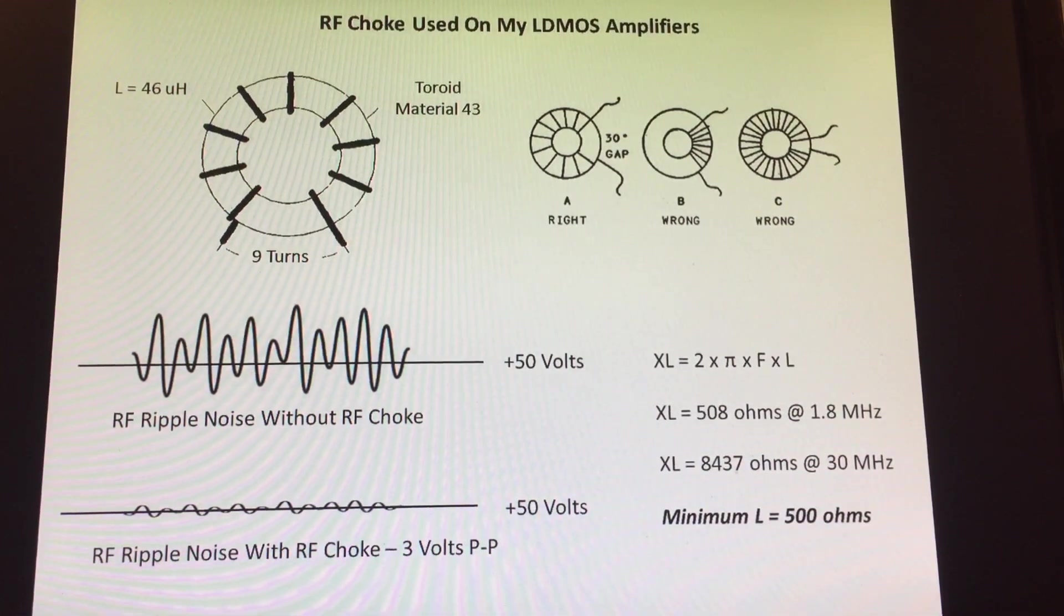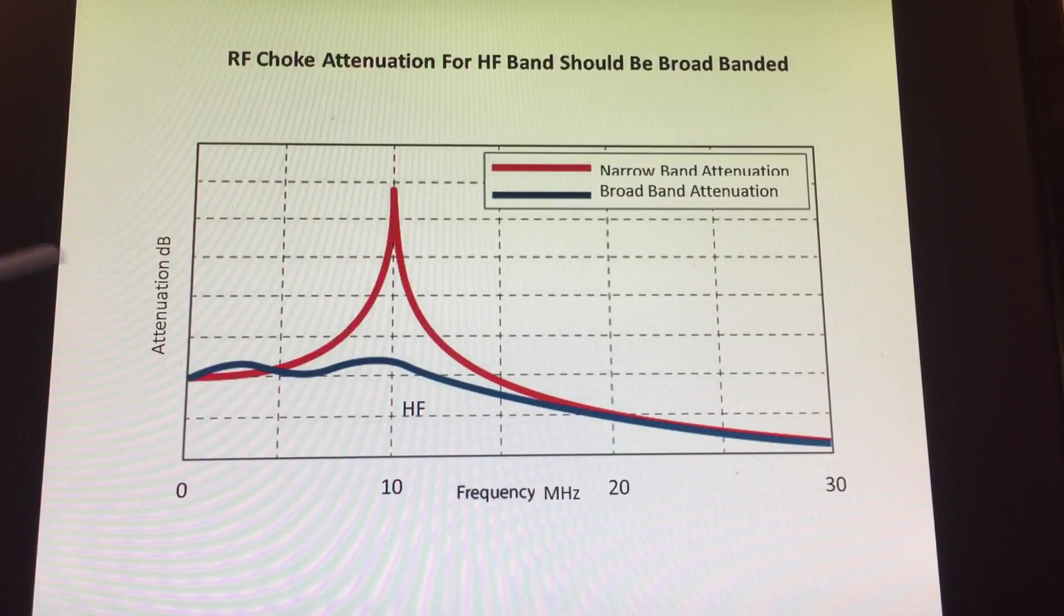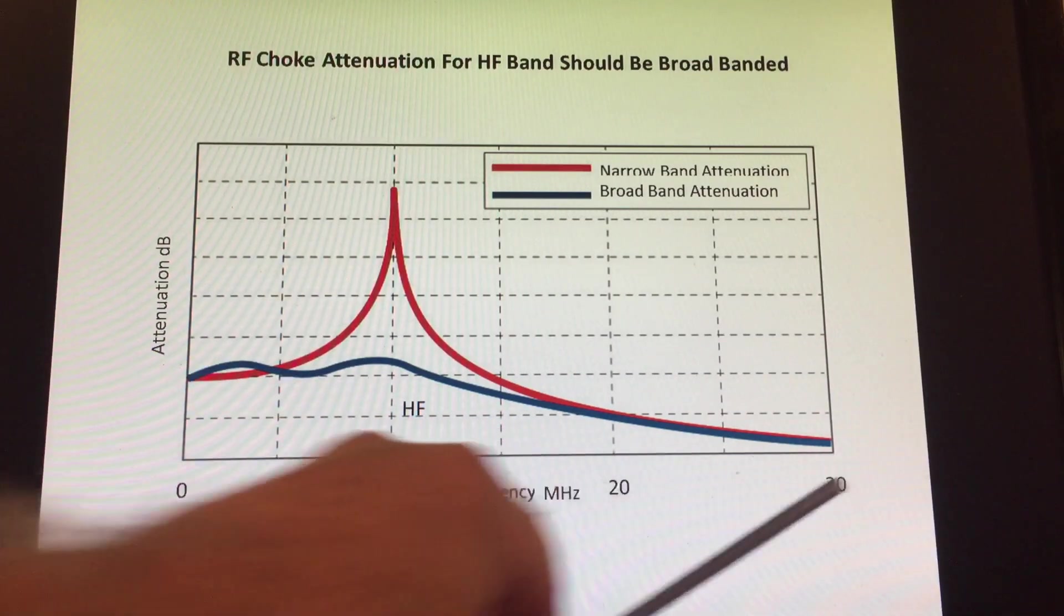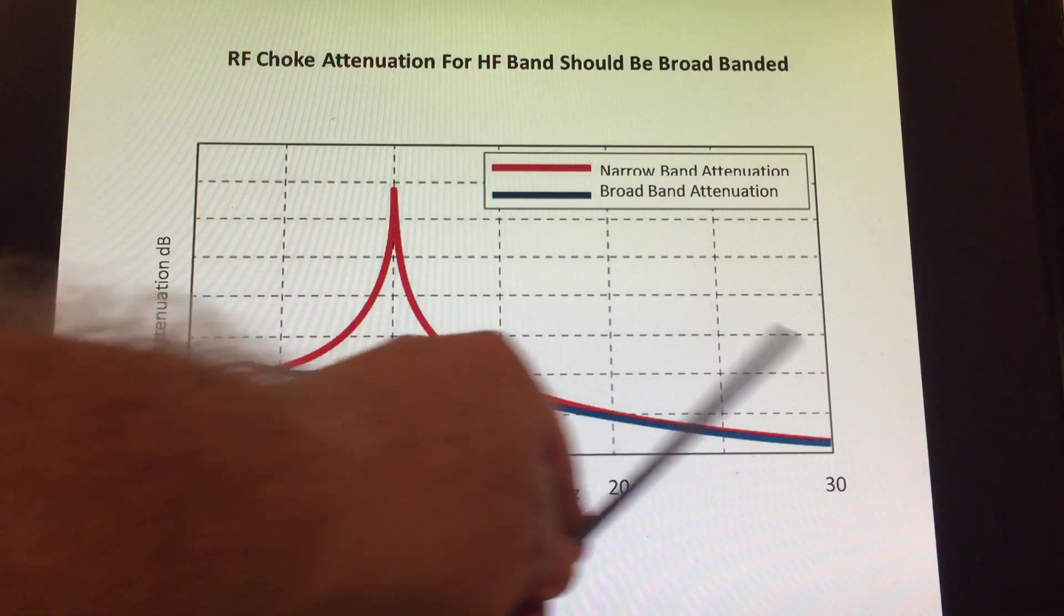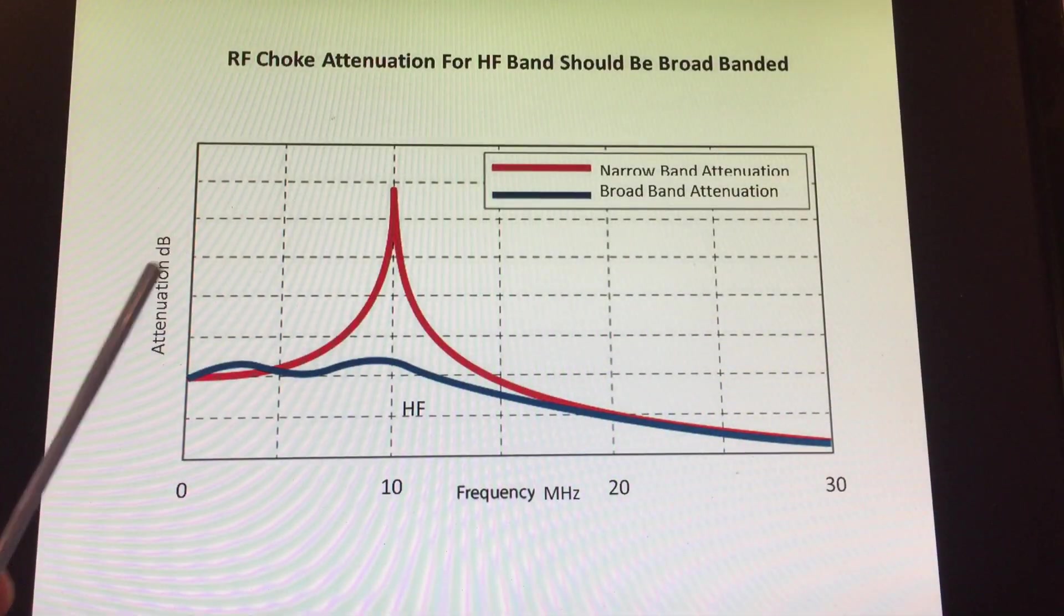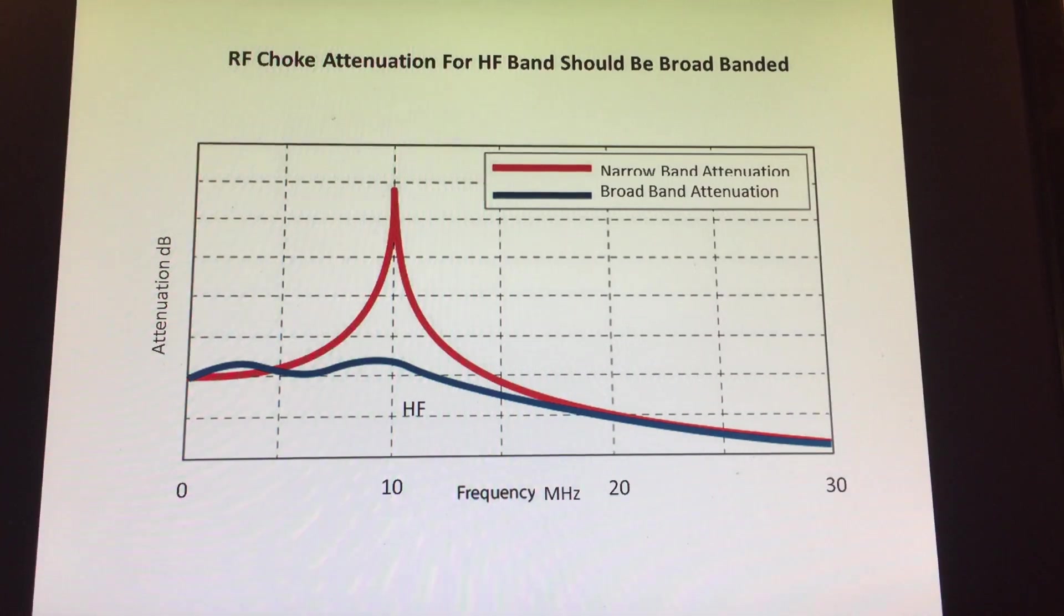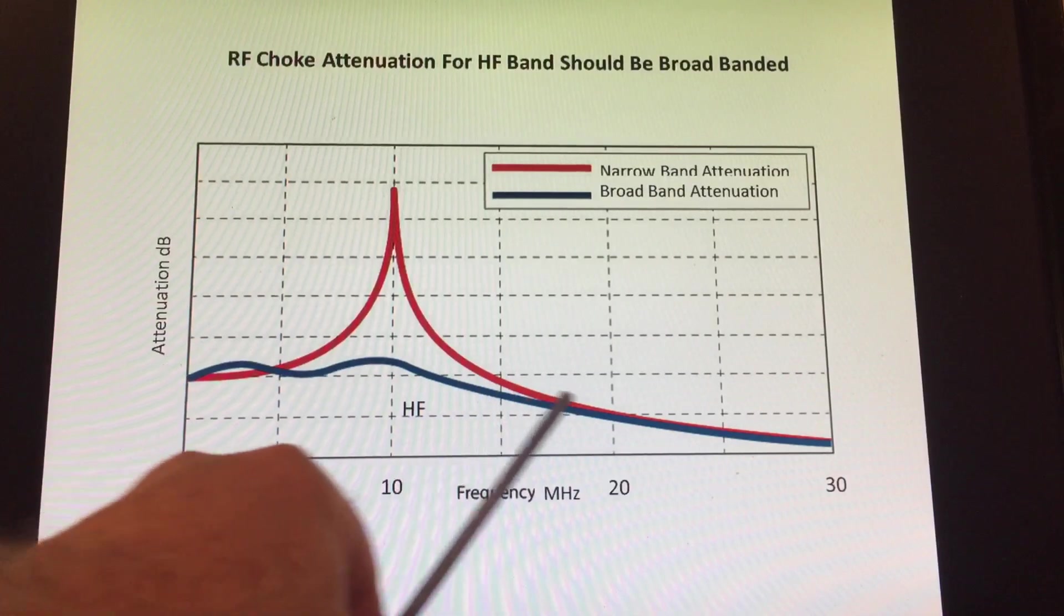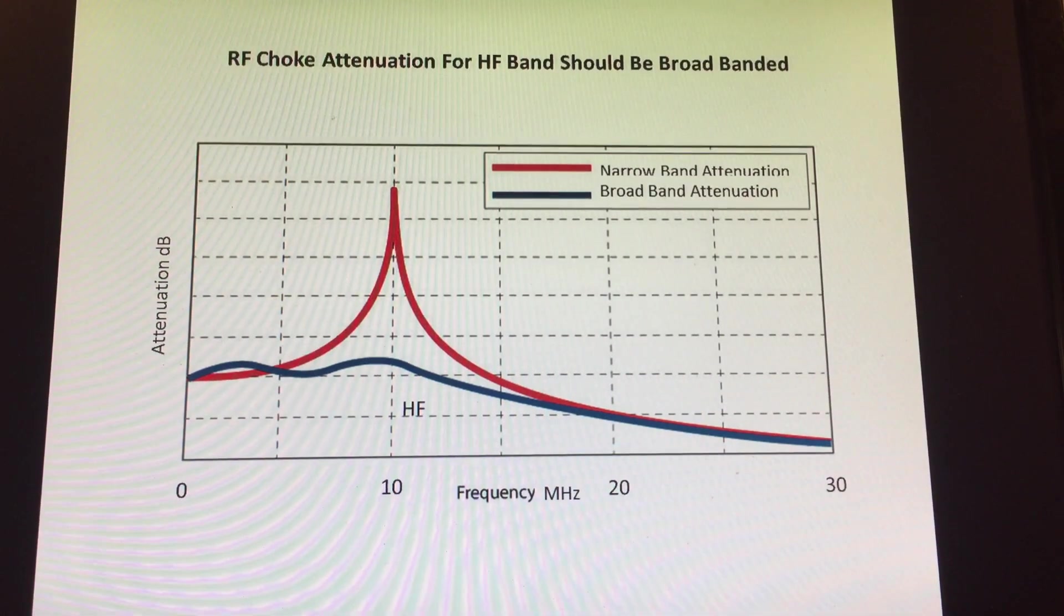How do we want the choke to respond? Well, for high frequency we want a very broad banded response. We don't want a narrow band because then I'm not going to be attenuating the RF signal over the entire band. We have about 28 megahertz of bandwidth from 1.8 megahertz to 30 megahertz. You want a fair amount of attenuation over that entire band. I'm going to set up my choke that I'm using on my LDMOS boards and we can take a look at the response on the nano VNA.